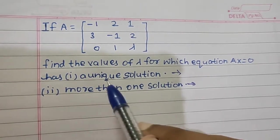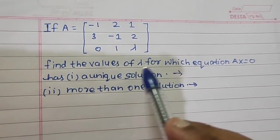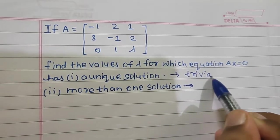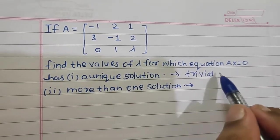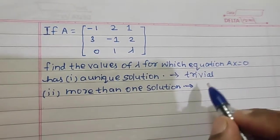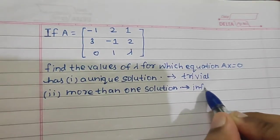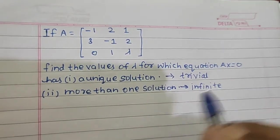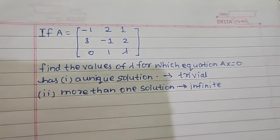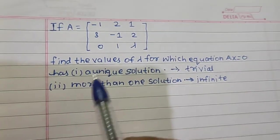Unique solution basically in case of homogeneous means trivial solution, that means the value of each variable is equal to 0. And more than one solution means infinite solution. There is no case of no solution in homogeneous.